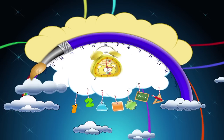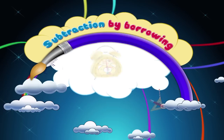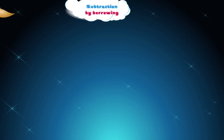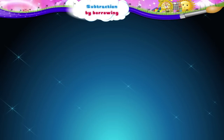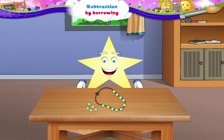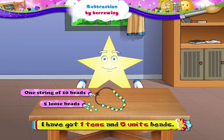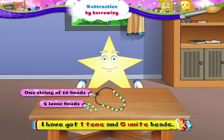Subtraction by Borrowing. I have got one string of ten beads with me and also five loose beads. It means I have got one tens and five unit beads.